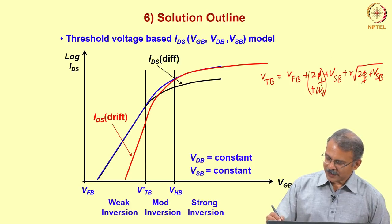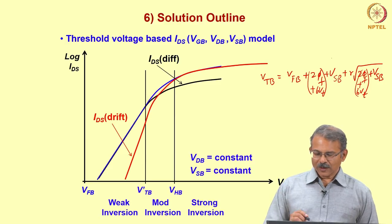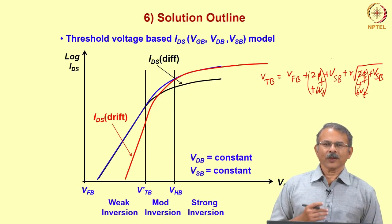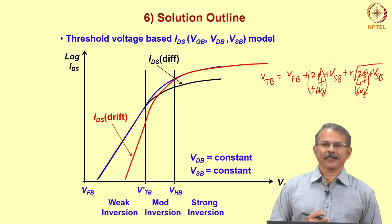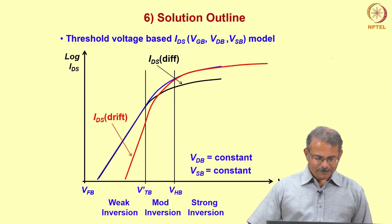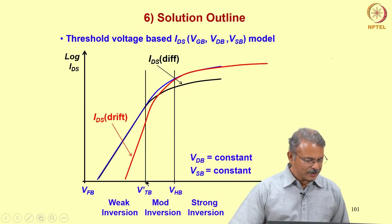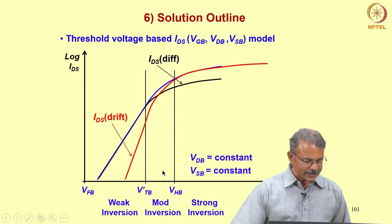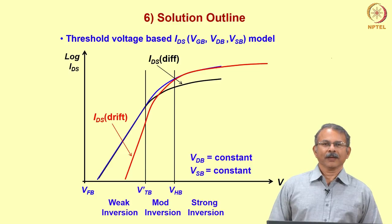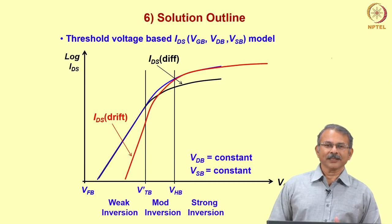Here also 2φf is replaced by 2φf + 6Vt to get Vtb. V'Tb is the threshold voltage based on the 2φf criterion, whereas Vtb is the threshold voltage based on the 2φf + 6Vt criterion. Vtb partitions the behavior into weak and moderate inversion, while Vhb partitions the behavior into moderate and strong inversion. This partitioning is the first step in a threshold-based regional model.